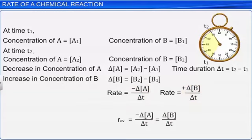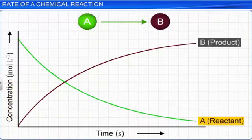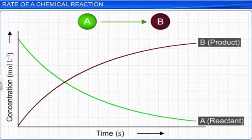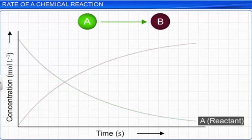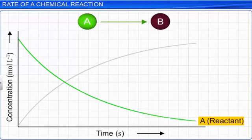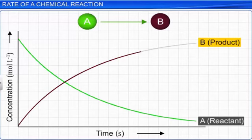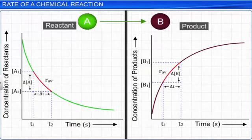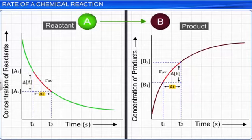Hence, the rate of reaction is always taken as the change in the concentration of the reactants or products in a definite interval of time. This is called the average rate of chemical reaction. If we plot the concentration of A and B against time, we get a graph showing that the concentration of reactant A decreases with time while the concentration of product B increases with time. The change in concentration and the time taken depict the average rate.